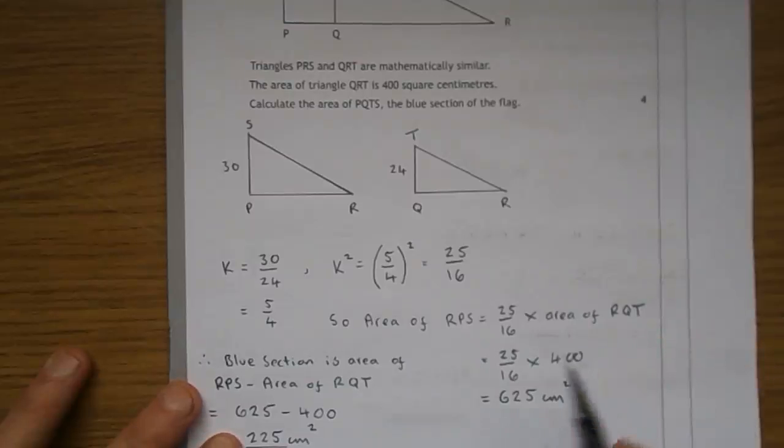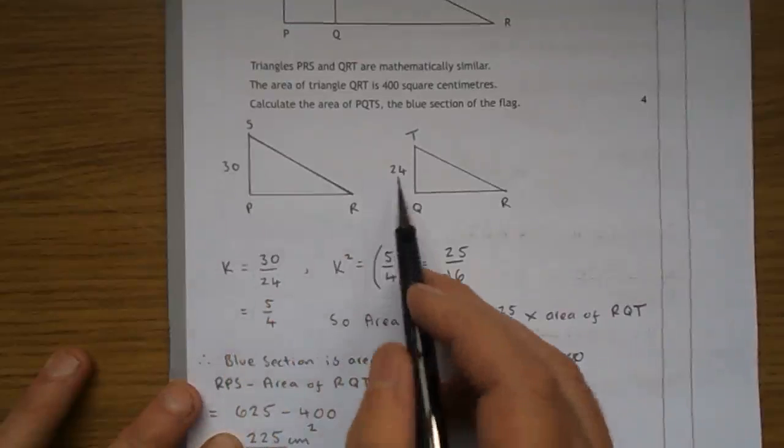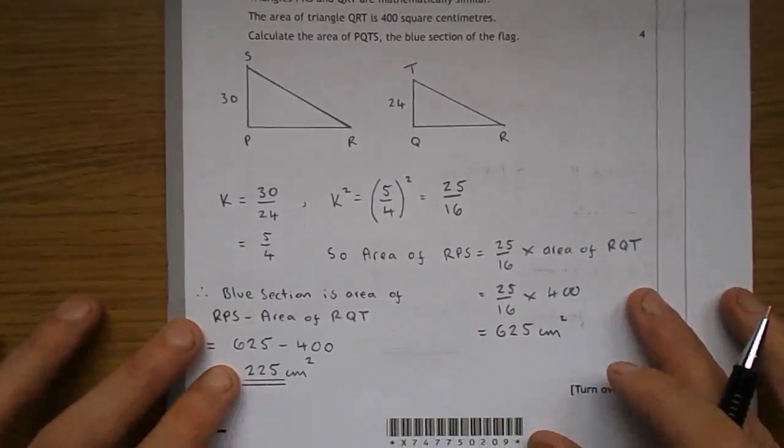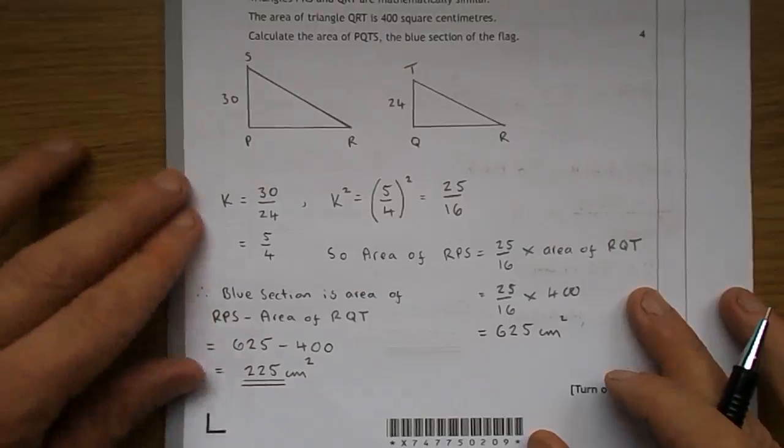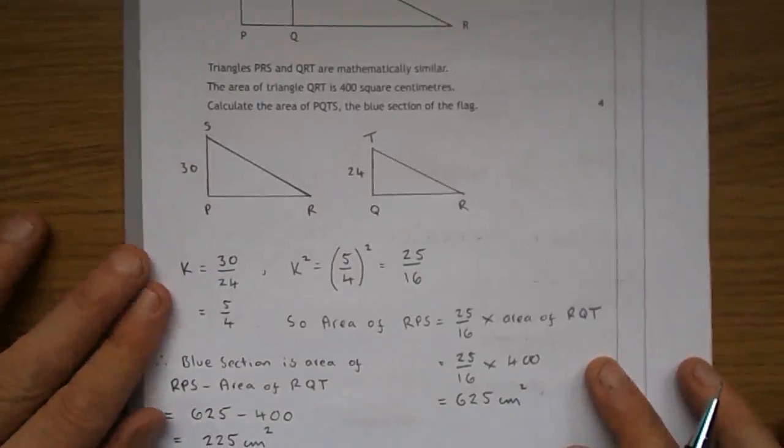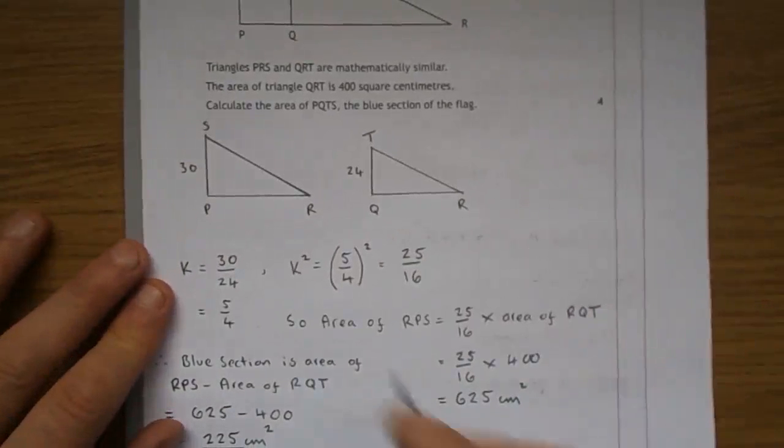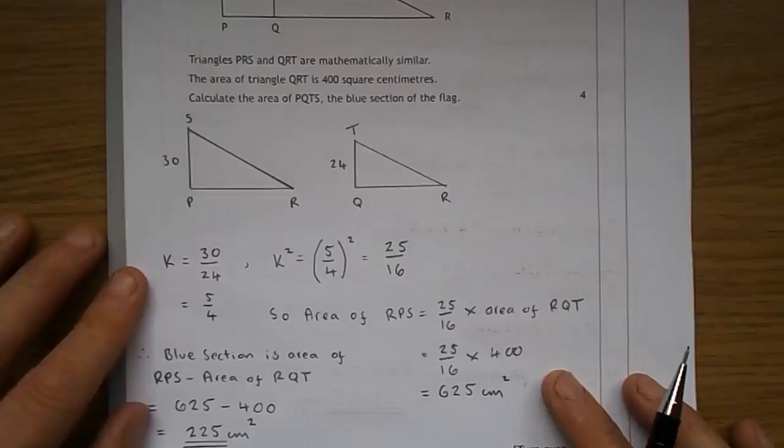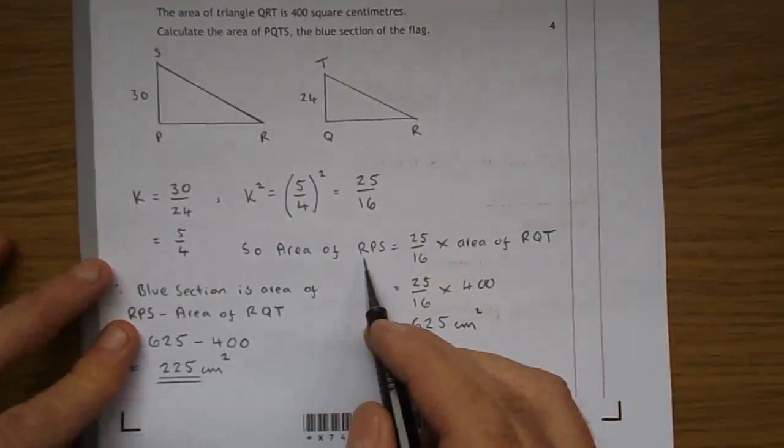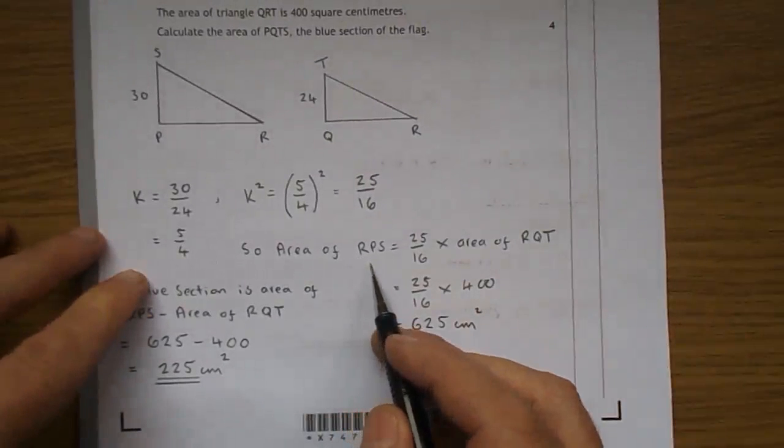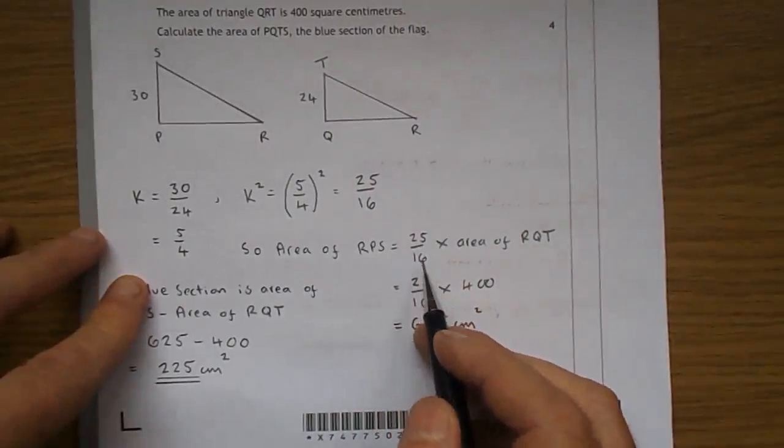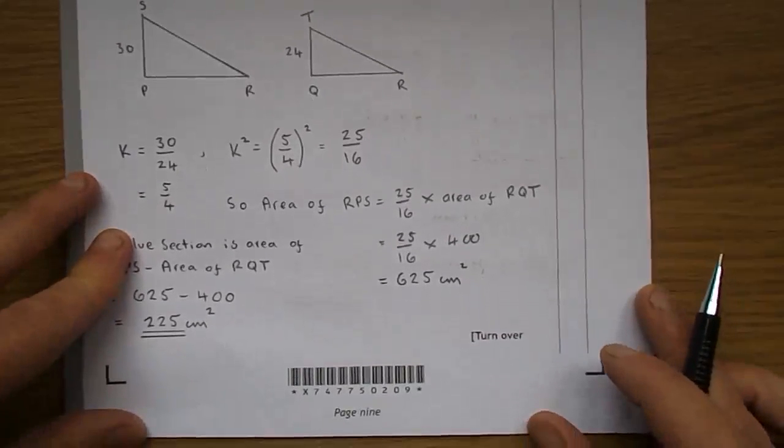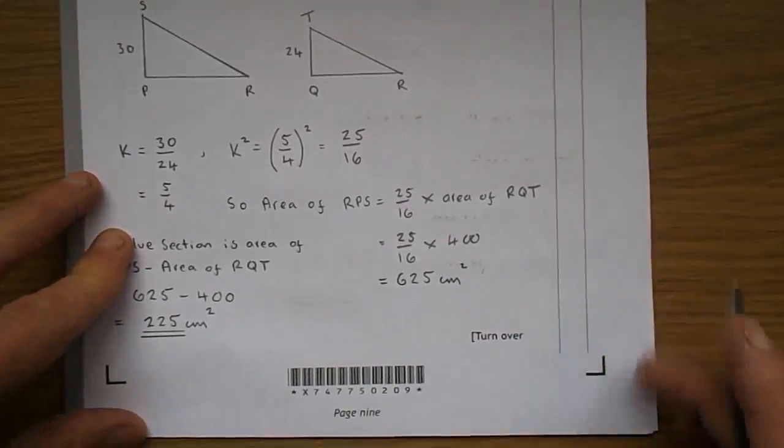The area of triangle QRT, QRT, that's 400. We need to get the big area here. Let's get the scale factor. When I'm doing scale factor, I always tend to do big number over little number, 30 over 24. Calculate, I'll simplify that to 5 over 4. And if we're talking area, what's the area factor? You square the scale factor and you get 25 over 16.